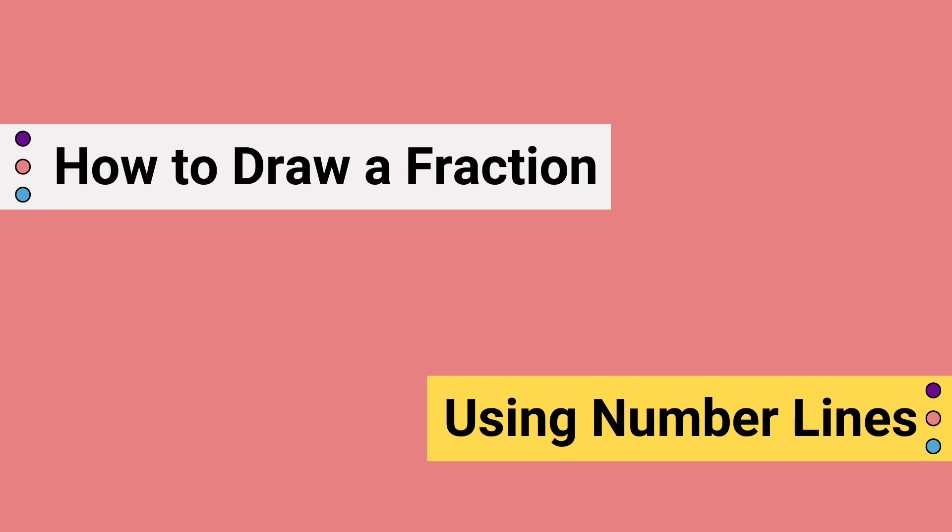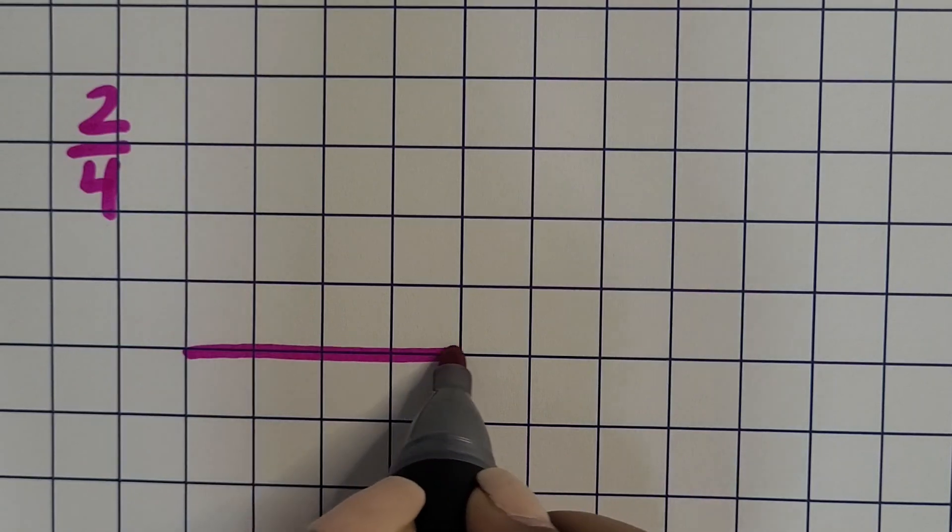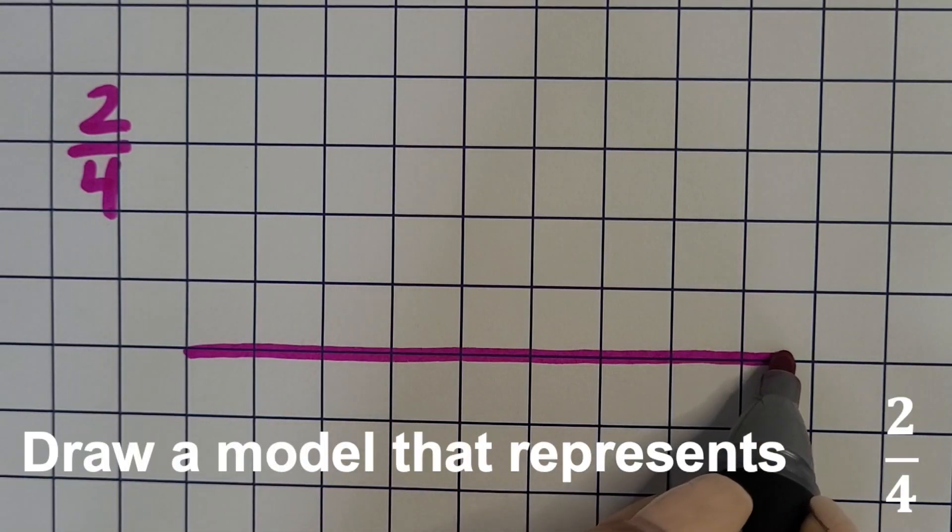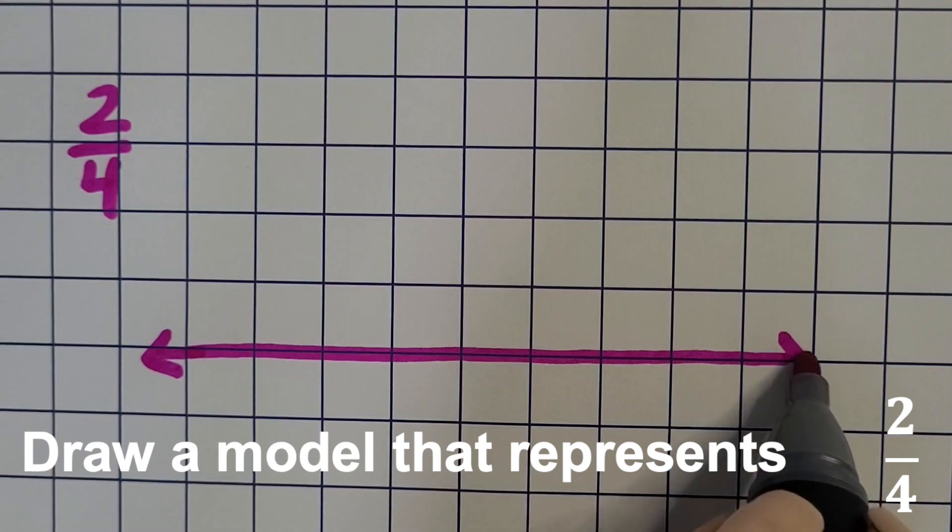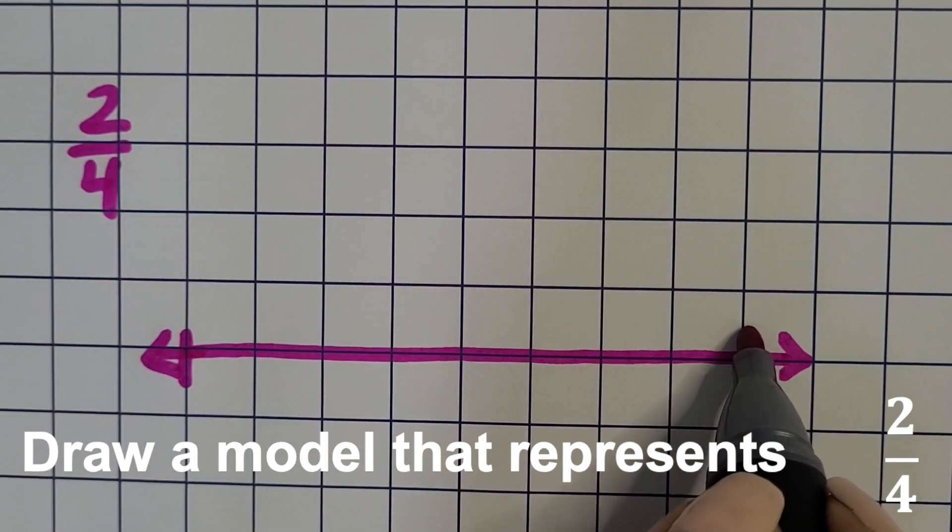How to draw a fraction using number lines. Using grid paper, we can draw a straight line across and start by labeling one endpoint zero and the other endpoint one.